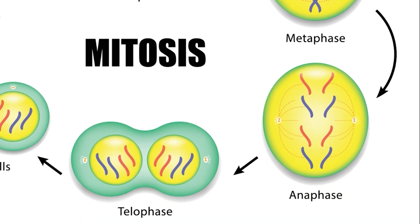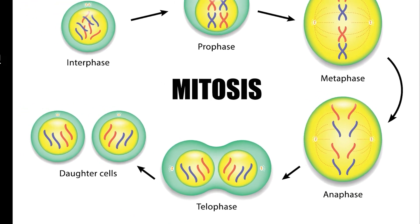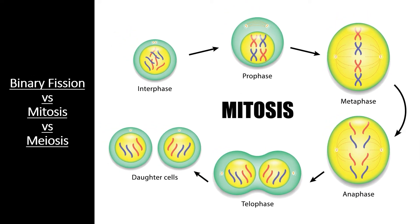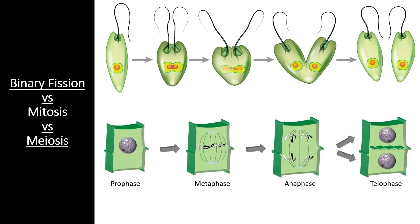Besides this, eukaryotic cells also have a nuclear envelope and other organelles to deal with, adding to the complexity of mitosis. Mitosis is the main process used by single-celled eukaryotes to carry out asexual reproduction. However, it is also responsible for building and maintaining the bodies of multicellular organisms.